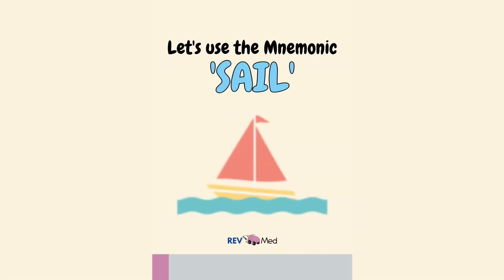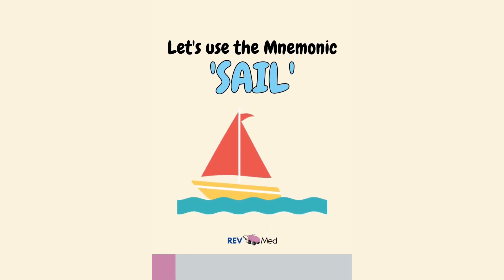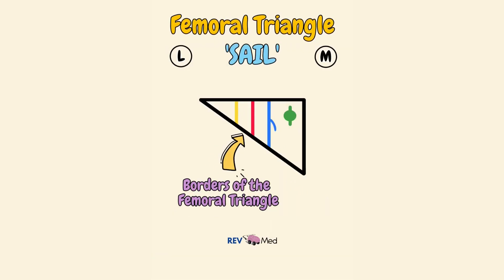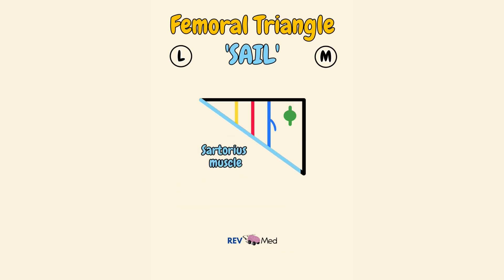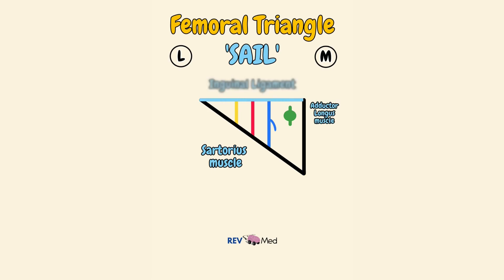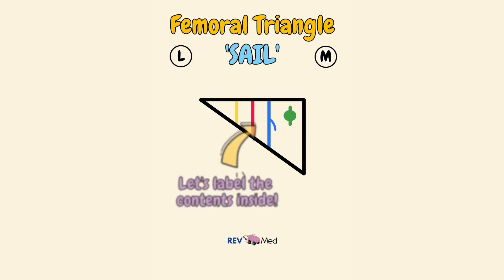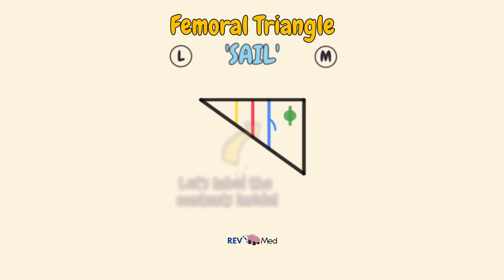Now that's it — you've drawn it. Let's use the mnemonic SAIL to label the contents of the femoral triangle. SAIL represents the borders of the femoral triangle: S for sartorius muscle, representing the lateral border; A for the adductor longus muscle on the medial border; and IL represents the upper border, which is the inguinal ligament.